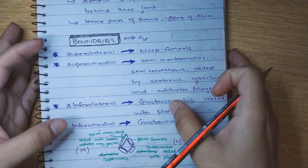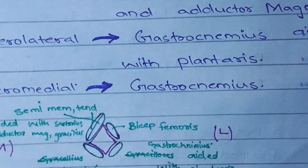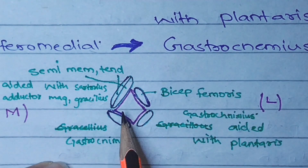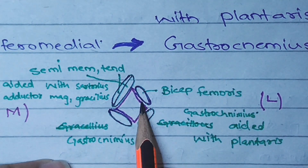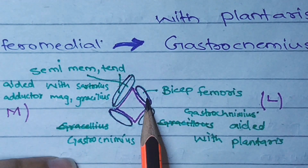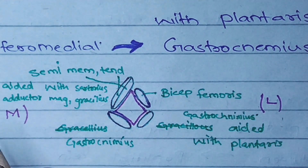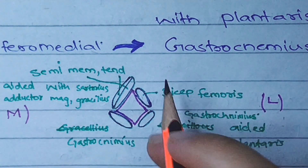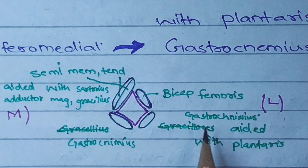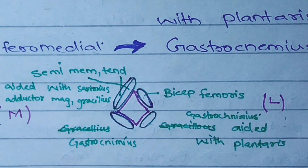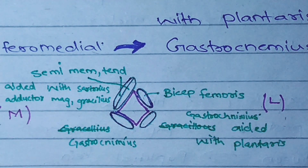We have a diagram. This is our popliteal fossa. We have four boundaries. The superior lateral boundary is the biceps femoris. In the inferior lateral side, we have the gastrocnemius, aided with the plantaris muscle.